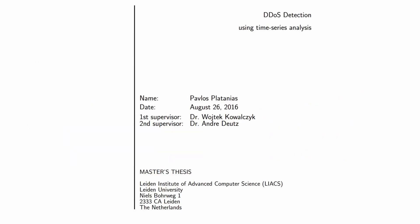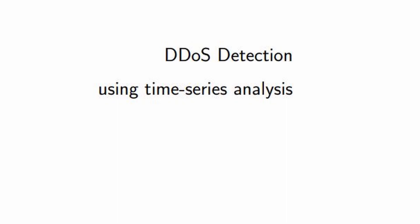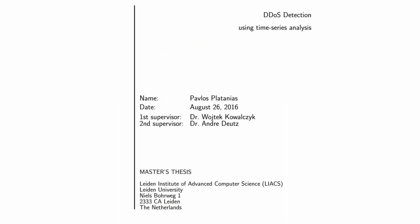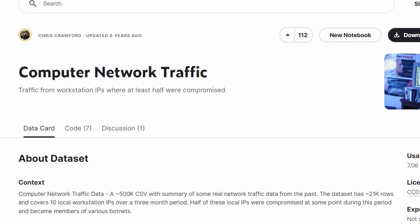After looking around, I found a master's thesis on DDoS detection using time series analysis by Pavlos Plutanius, which my trend graph shared a few but not many similarities with. You might be wondering: why didn't I opt for option 2 and get a large database to create a much more accurate trend graph? And I have a good reason for this.